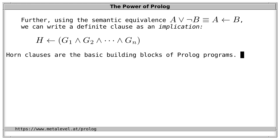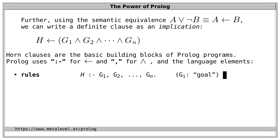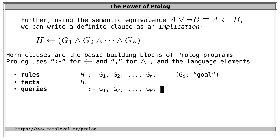Horn clauses are the basic building blocks of Prolog programs. Prolog uses colon-dash as a transliteration of the left arrow and comma for and. In Prolog, the language elements closely correspond to the three types of Horn clauses. A rule has the shape h colon-dash g1 comma g2 comma and so on comma gn, and each gi is called a goal. Facts consist of only the head — a fact can be regarded as a rule where the body is true. And queries are written as colon-dash followed by one or more goals, asking whether the conjunction of those goals is a logical consequence of the Prolog program.